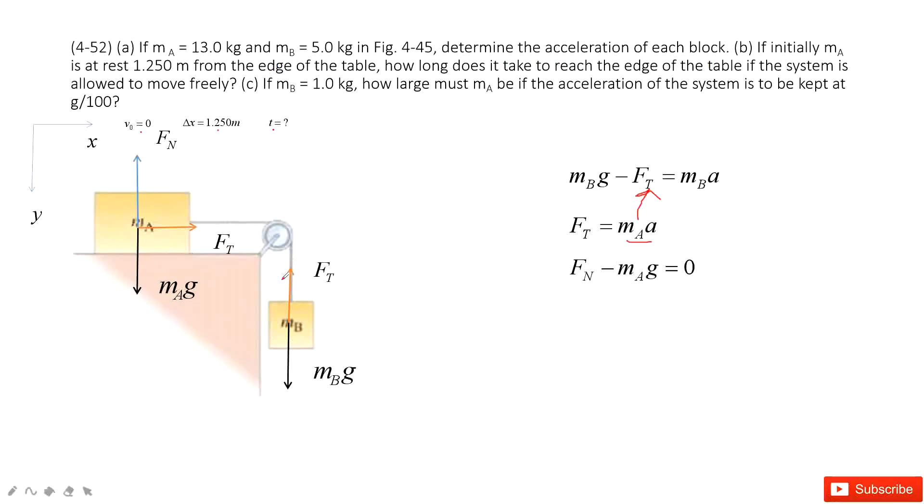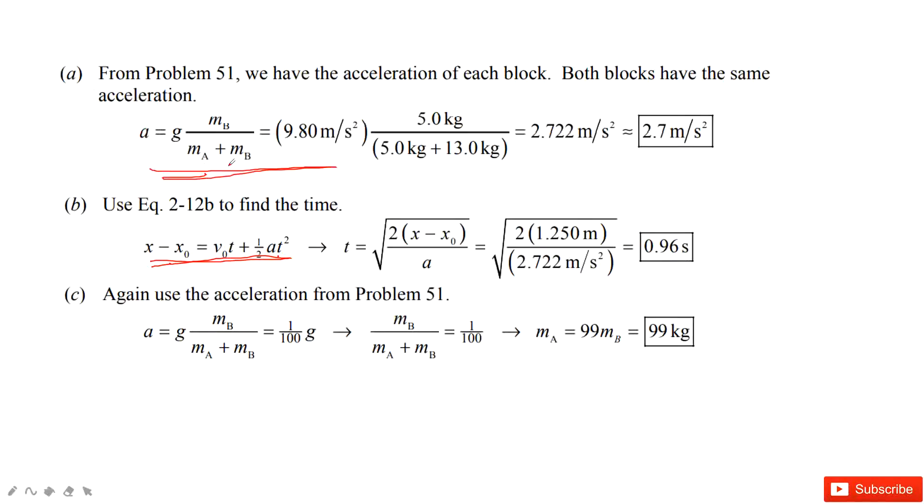The next problem tells you, if in this case the mass of B becomes 1 kg, we want to make the acceleration to be 1/100 of g, and ask you how much mA must be to keep this system following these rules. So we still consider, we get the function, the acceleration with the mass from A from question A.